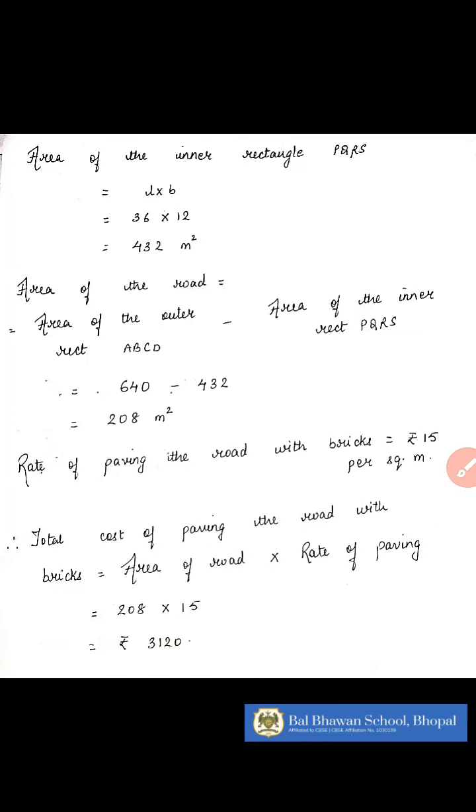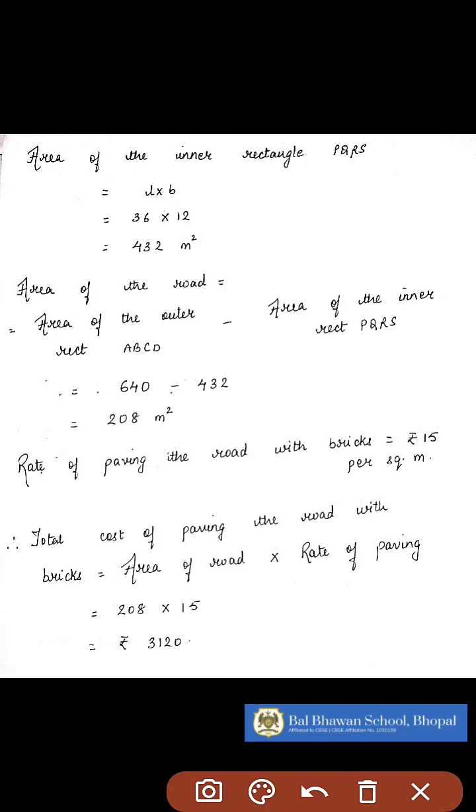And the area of the inner rectangle PQRS will be length into breadth. We found out the length and breadth as 36 and 12. So it will be 36 into 12, that is 432 meter square.